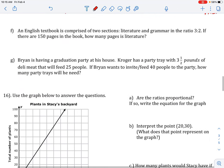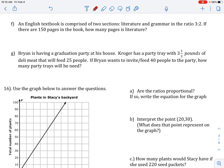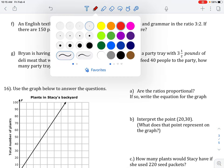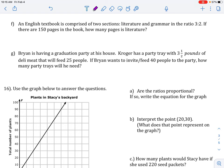Flip to the next page. An English textbook is comprised of two sections, literature and grammar, in the ratio of 3 to 2. So, 3 lit, 2 grammar. If there are 150 pages in the book, there's a total. How many pages is literature? So, we are talking about literature over total pages.